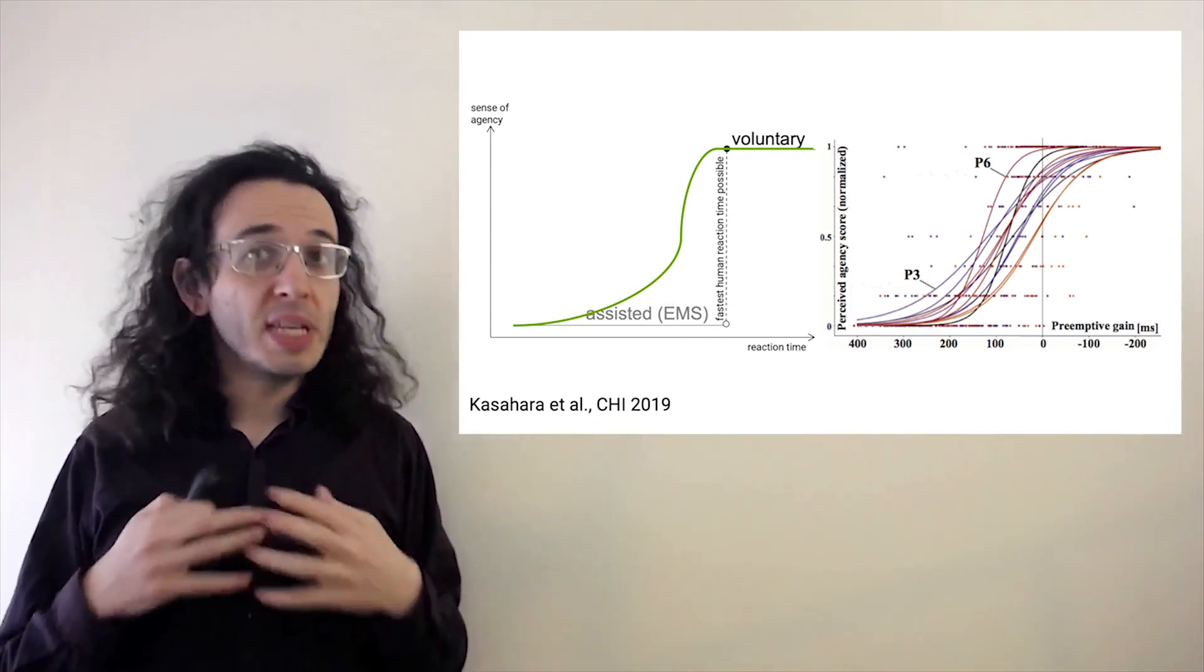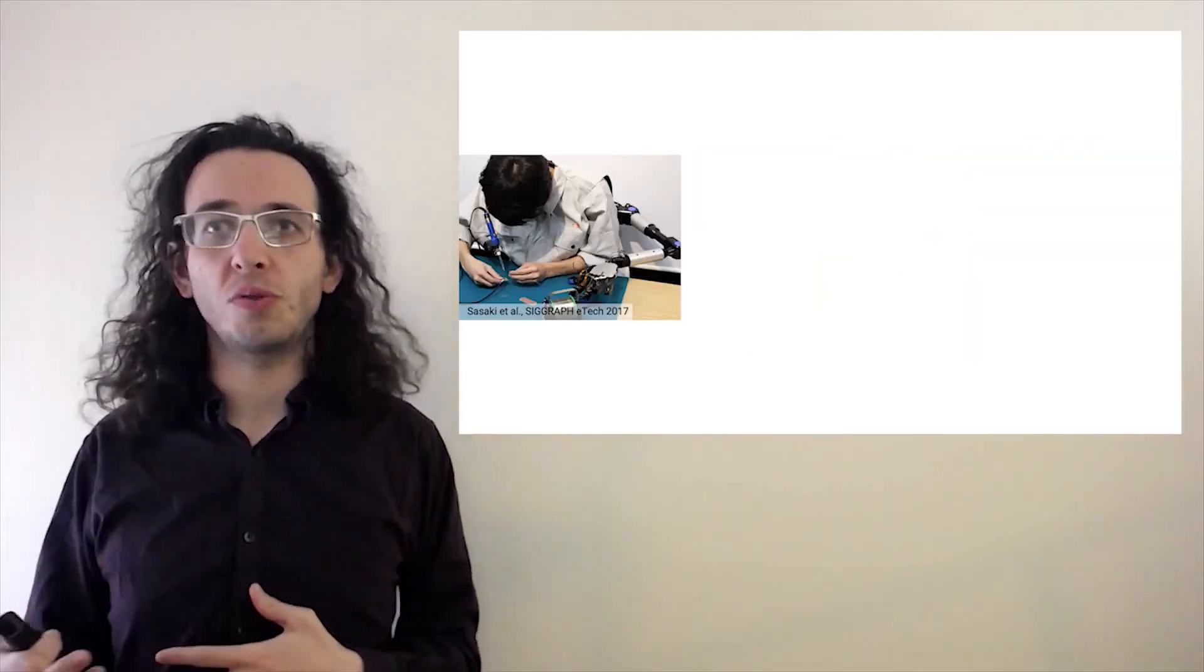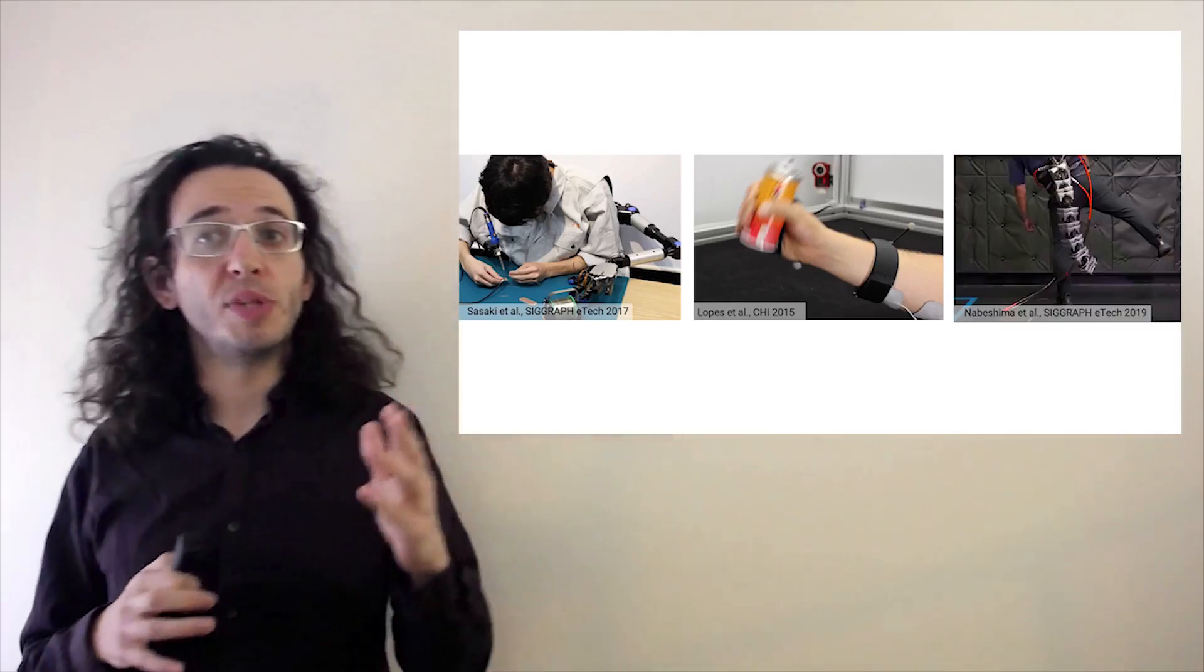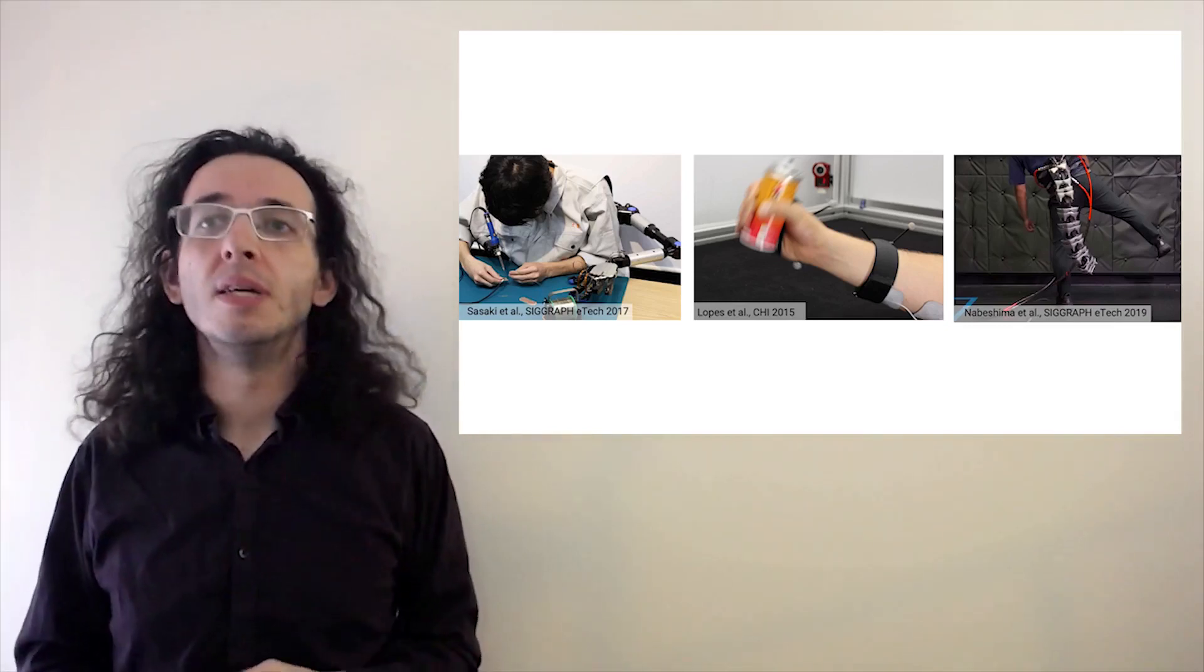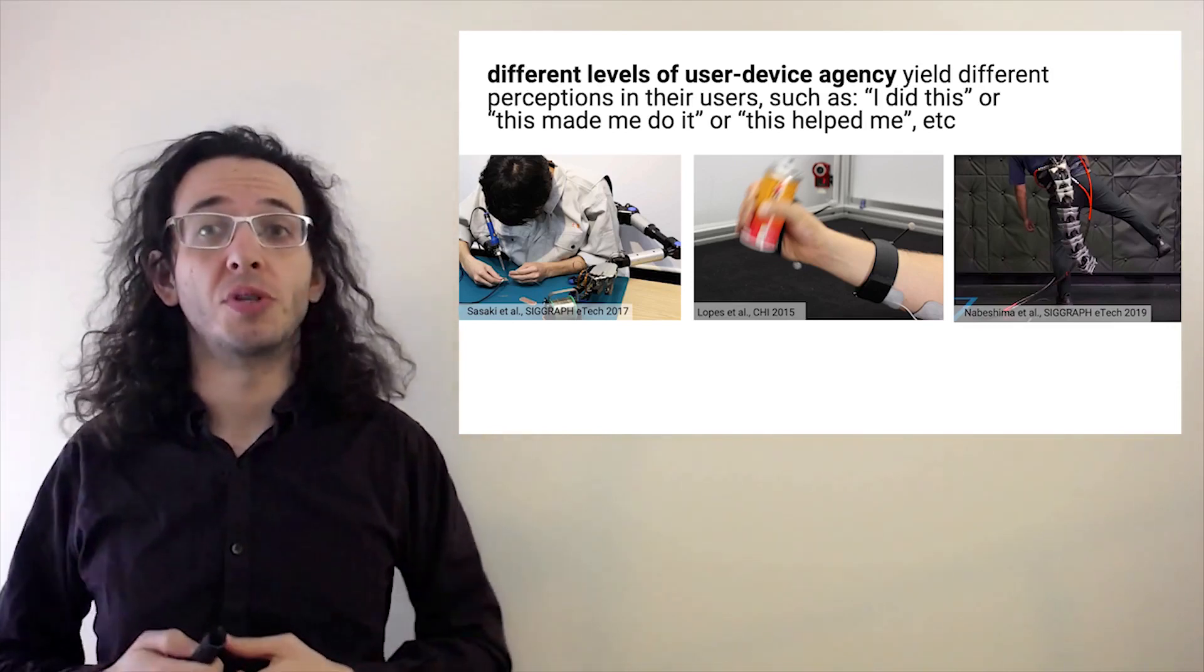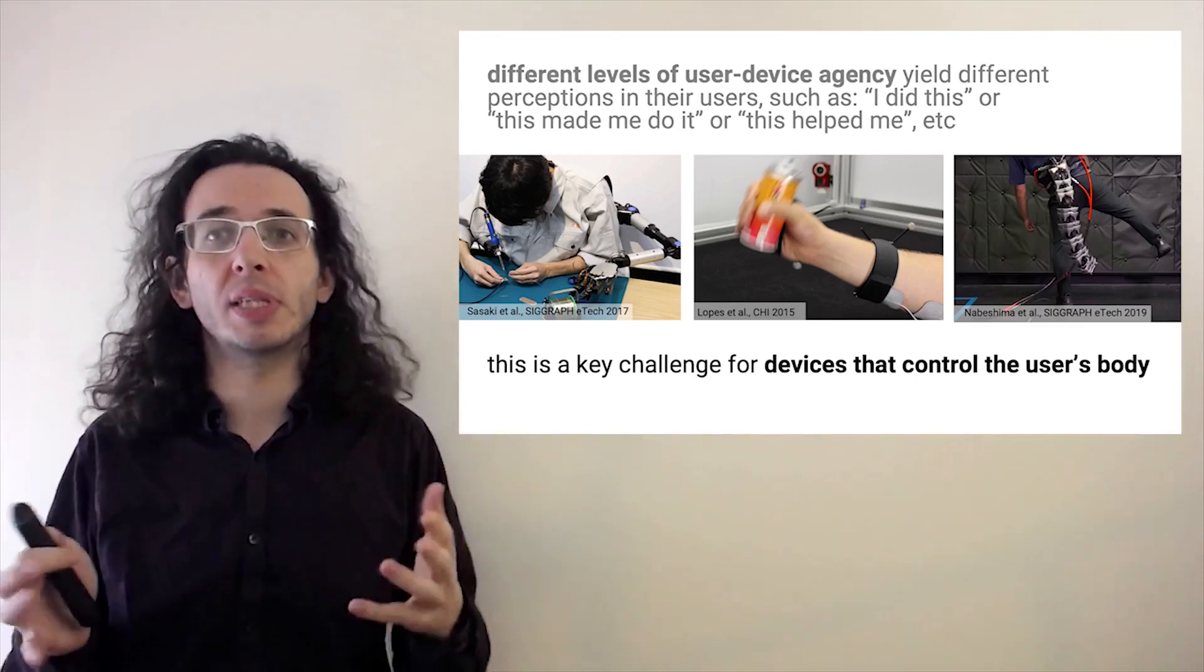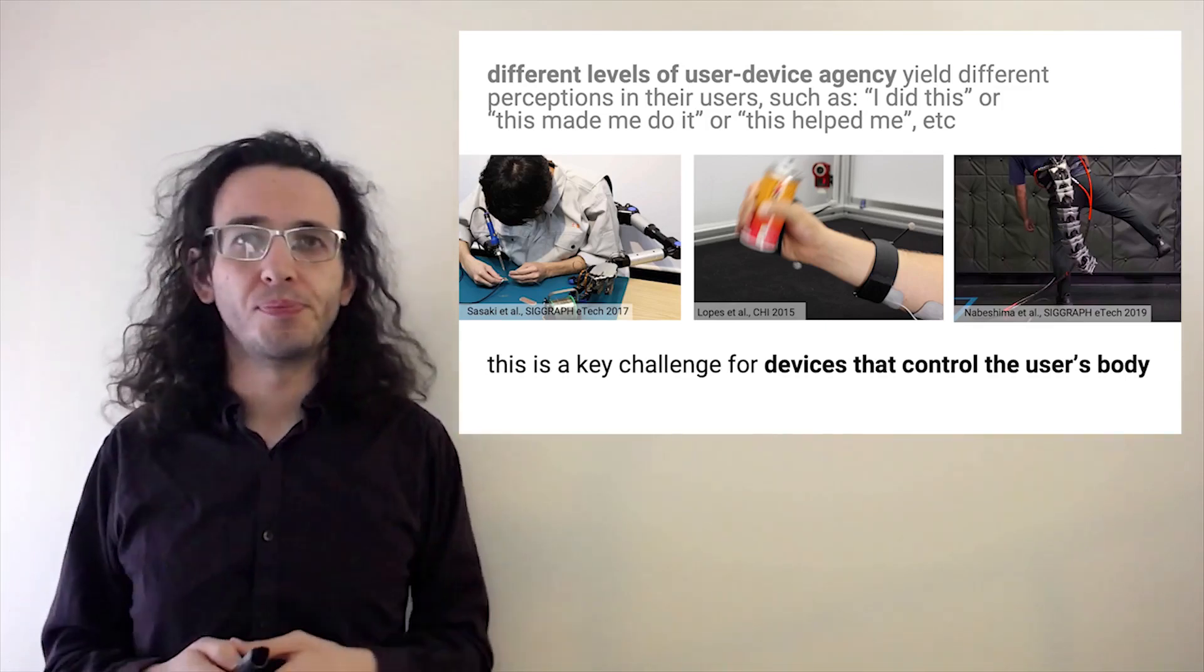And in fact, there are many, many other devices out there that can achieve this kind of assisted control such as extra limbs that hold tools for you, or muscle stimulation that makes you operate a tool that you've never used before, or even a tail that automatically balances your body. Now these exhibit varying levels of agency from user-driven to kind of mixed initiative to things that just automatically do their thing. And as such, different balances between this user and device agency might yield very different perceptions in their users, such as I did this, or this made me do it, or this helped me. And we think this is really a grand open challenge for devices that have the ability to control the user's body. How are you going to design your interfaces to have this mixed initiative and mixed agency?